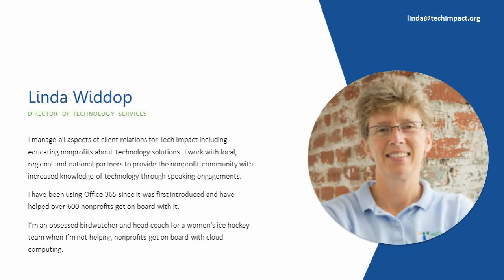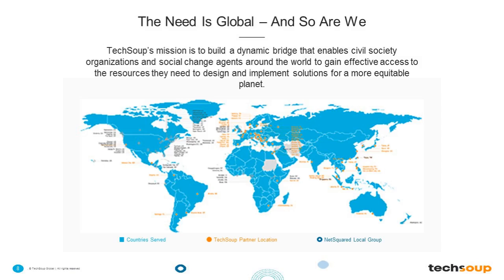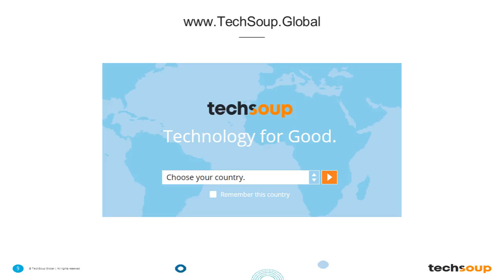A little bit about TechSoup. We are located here in San Francisco, California, and we would like to know where you are from — please tell us in the chat box what city and state, or country you are joining us from. We are a 501(c)(3) nonprofit like many of you joining us today. We work to empower organizations around the world to help them get the latest tools, skills, and resources to help them achieve their mission. You can see from our map that we serve almost every country in the world. We have 62 partner NGOs around the world, and a dedicated website for countries outside of the U.S. at www.TechSoup.Global.